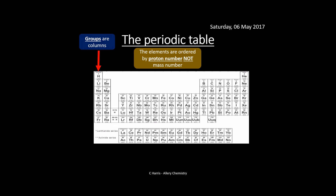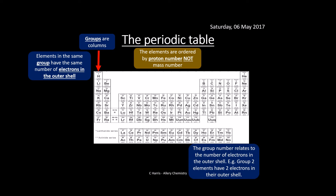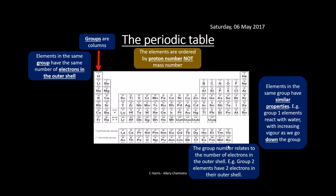Groups are columns — they go down. The elements in the same group have the same number of electrons in their outer shell. Group one has one electron, group two has two electrons, etc. Elements in the same group have similar properties. For example, all the group one elements react violently with water — you might have seen this when you put them into a big trough of water and they explode, producing hydrogen. They're pretty reactive, and they react with increasing vigor as we go down the group. Lithium doesn't react as much, but I wouldn't want to be standing next to francium.